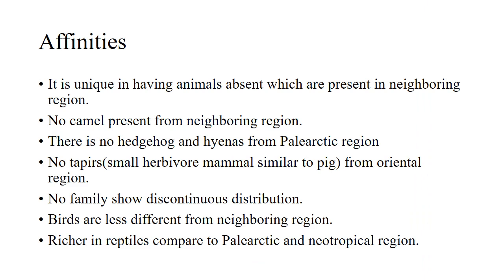At the end we will discuss affinity. The Nearctic region is unique in having animal groups absent from the neighboring regions. There is no camel, no hedgehog, and no hyena from the Palearctic region, and no tapirs from the Oriental region. No family shows discontinuous distribution. Birds are less differentiated from neighboring regions, and the region is rich in reptiles compared to the Palearctic and Neotropical regions.